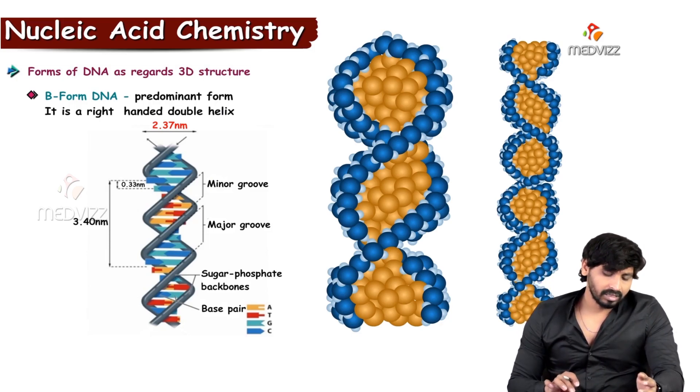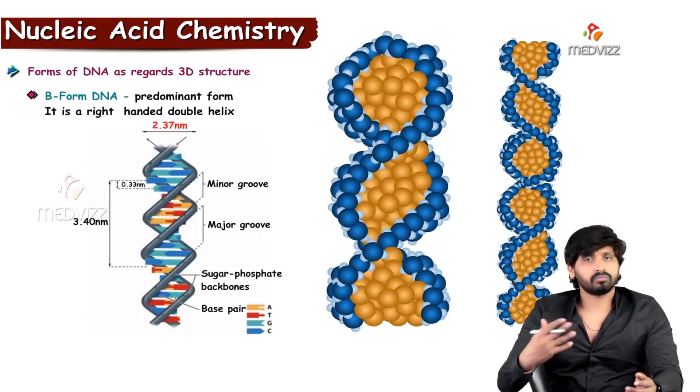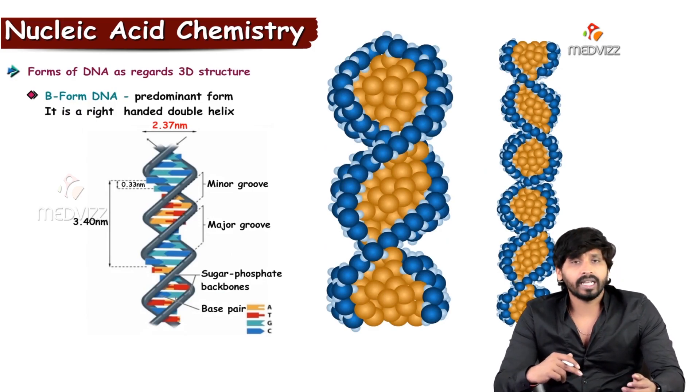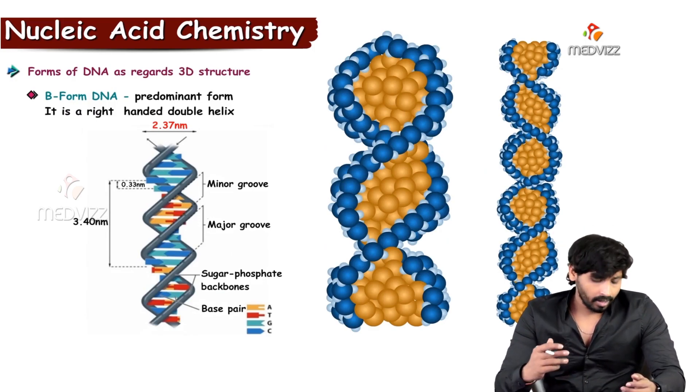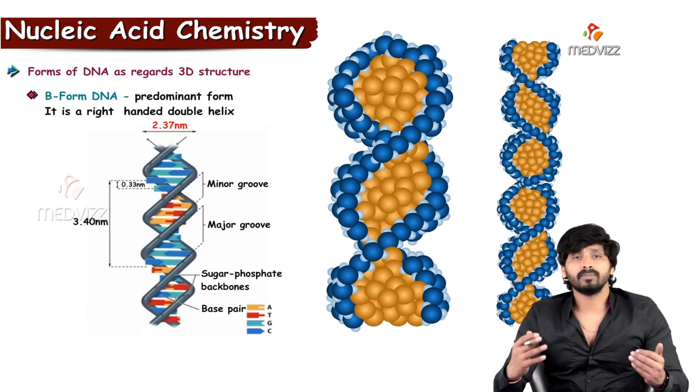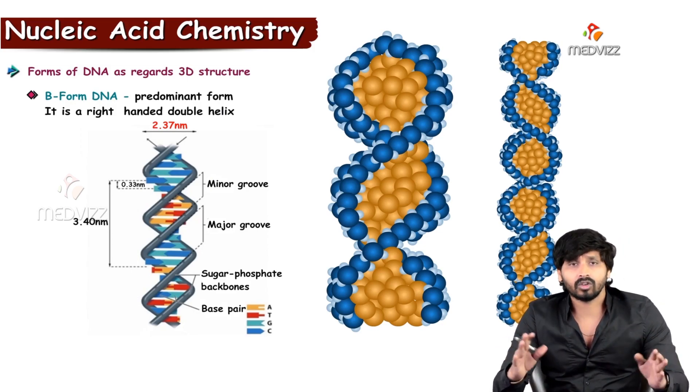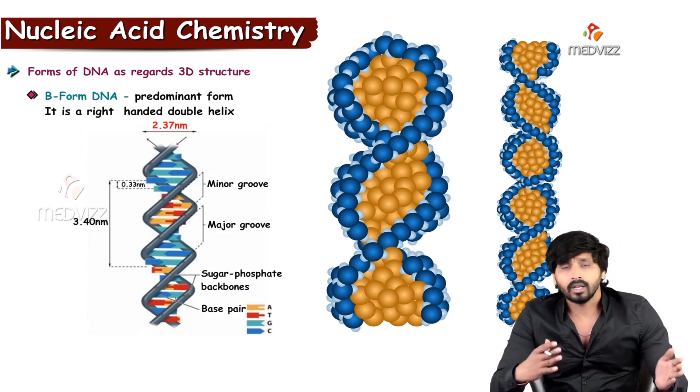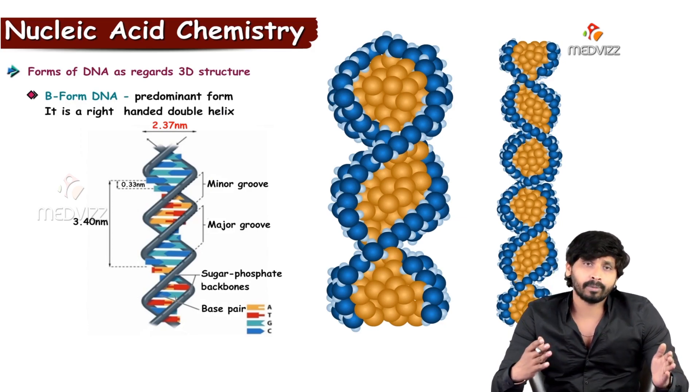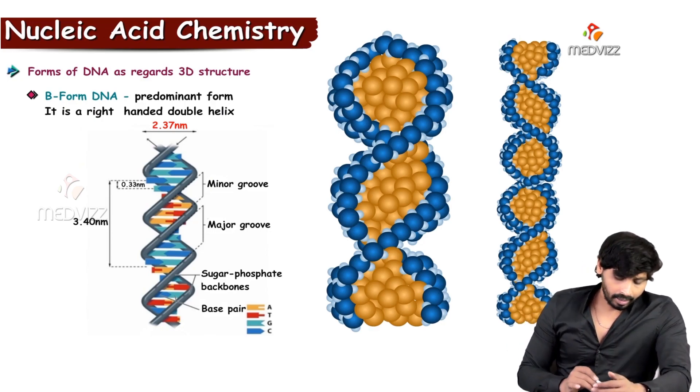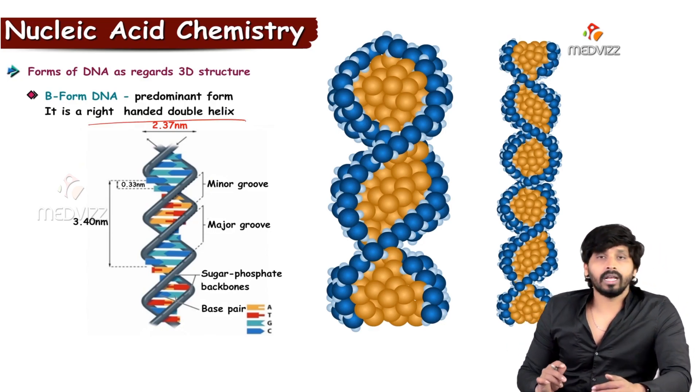A form is similar to B form of DNA. When you're talking about the B form, this is the commonest form of DNA. The Watson and Crick proposed DNA model is similar to B form. It is a right-handed double helix.